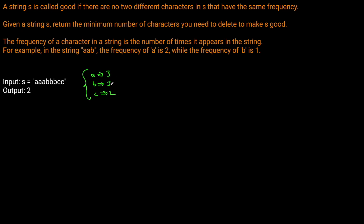We need to get to a point where each character has a unique frequency — they cannot be duplicated. So we're going to need some sort of data structure to track character counts. We want to know in constant time whether or not a count has been used before — we don't want to iterate through the dictionary to check. So we're probably going to want a set to keep track of our frequencies.